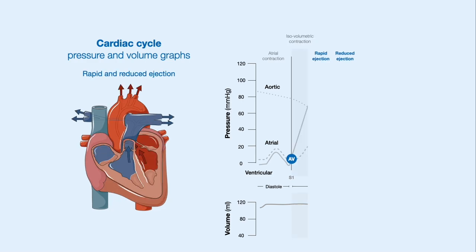During rapid and reduced ejection, the ventricular pressures continue to rise to exceed the aortic pressure, and this causes the opening of the semilunar valve. Ventricular blood volume decreases as it is ejected into the aorta, and as blood is pushed into the aorta, aortic pressures rise and fall similarly to ventricular pressures.